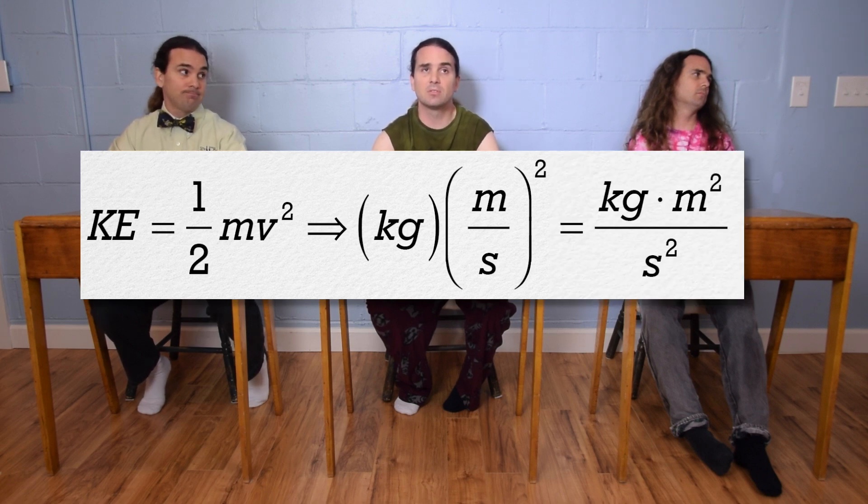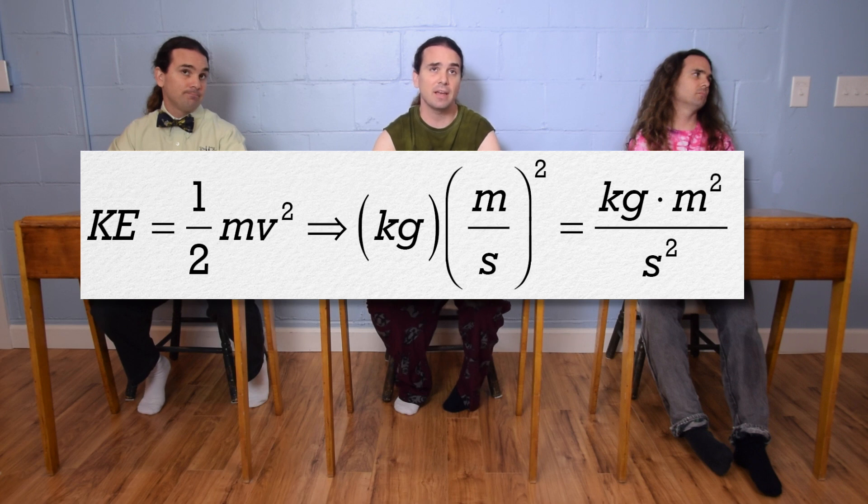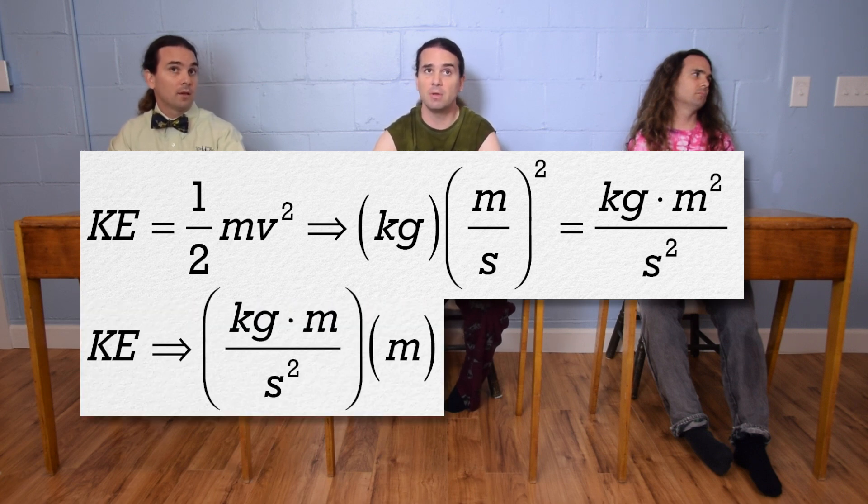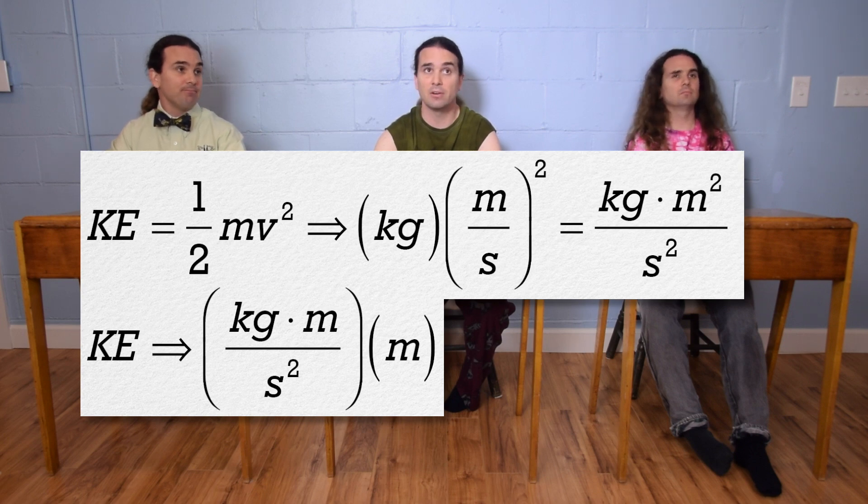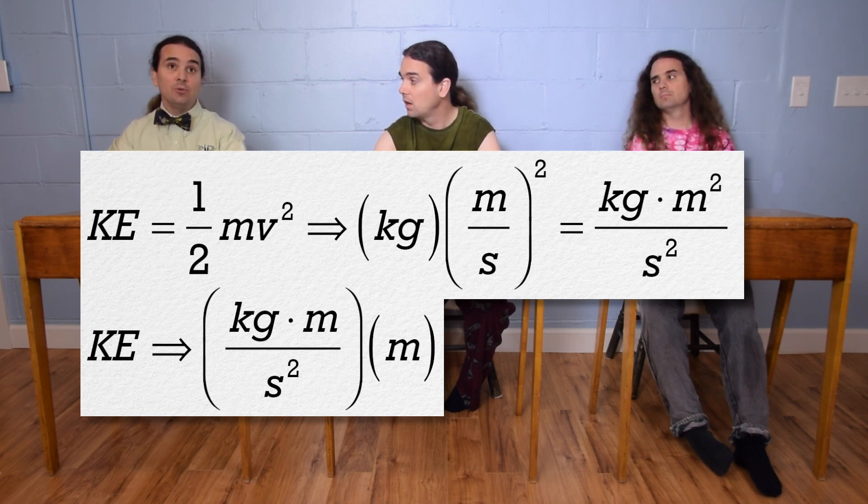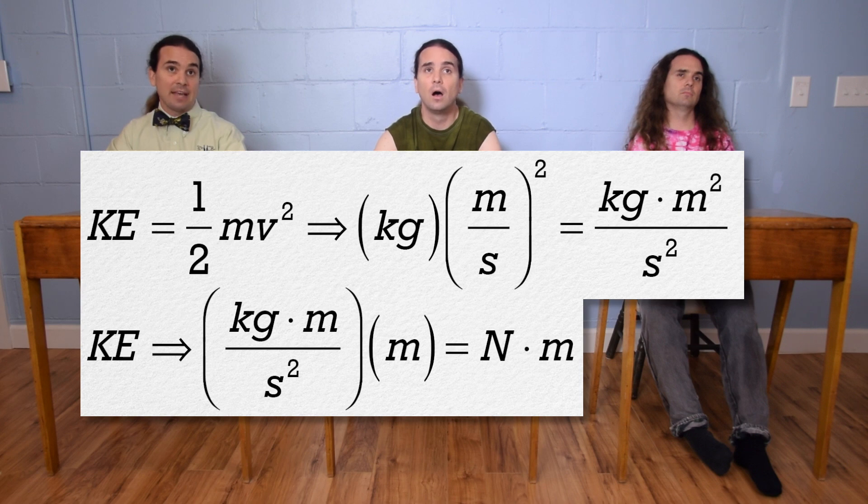Well, that works out to be kilograms times meters squared divided by seconds squared, which is the same thing as kilograms times meters per second squared times meters. Right, and newtons are kilograms times meters per second squared, so kinetic energy is in newtons times meters, which is joules.